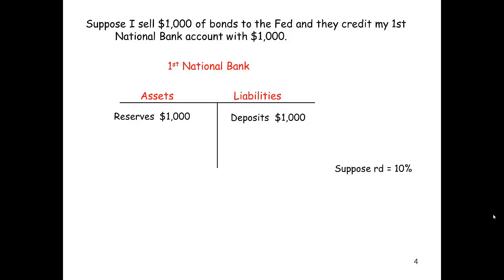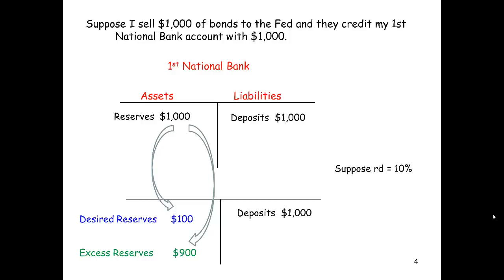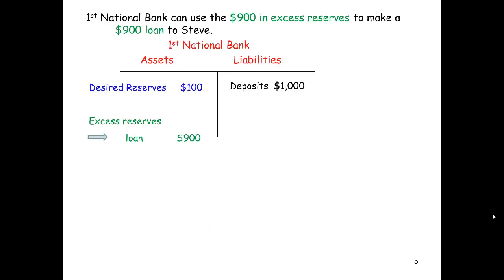They're liabilities because the bank owes that $1,000 to me — it's my account. Now let's suppose the bank wants to keep a reserve deposit ratio of 10%. That means it only has to hold 10% of $1,000, or $100, in reserves. We can think of splitting those reserves into desired reserves of $100 and excess reserves of $900. First National Bank can then use the $900 in excess reserves to make a $900 loan — let's say to Steve. Both sides of the balance sheet still add up.